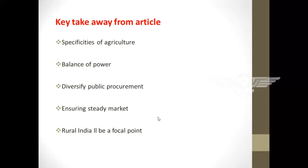Regarding diversifying public procurement, under the Food Corporation of India and the Agriculture Price Commission, the government concentrates on a few crops. From the Green Revolution, farmers were assured that their surplus would be bought by the government at a price high enough to live at a margin. Crops procured are made available to consumers at subsidized prices through the Public Distribution System. However, focusing on a few crops has resulted in growing water-intensive crops, leading to a steady decline in water tables and water quality.